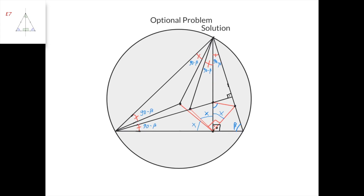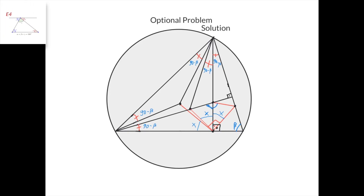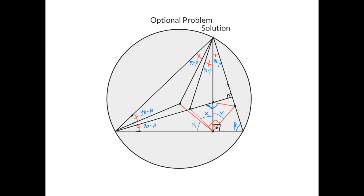Therefore this point and this point are symmetric with respect to this line, meaning this angle equals this angle due to symmetry. Since this angle is 90 minus beta and this angle is 90 degrees, this angle must be beta. And since this angle equals this angle from the symmetry, this angle is also beta — which is what we needed to prove.